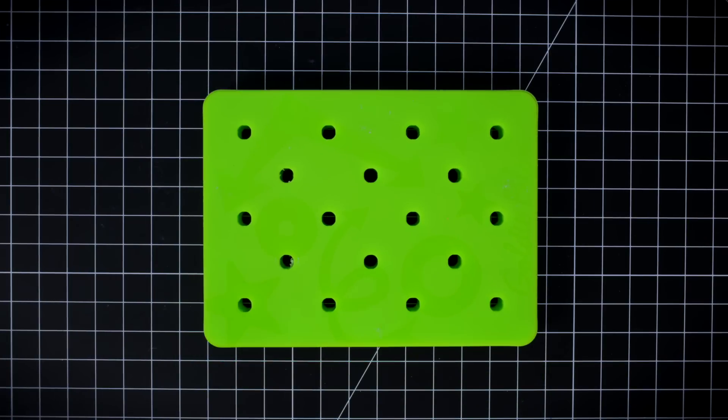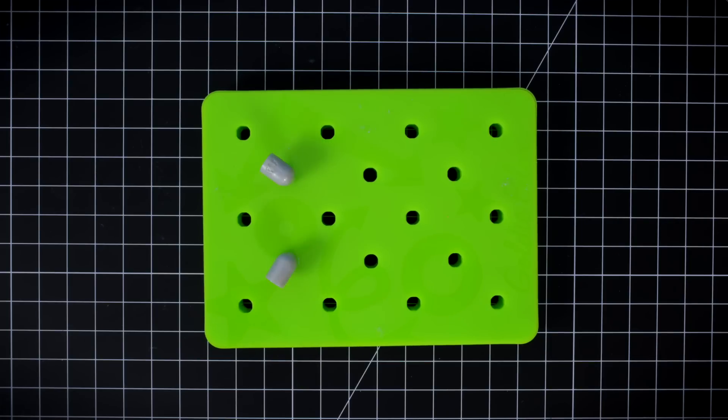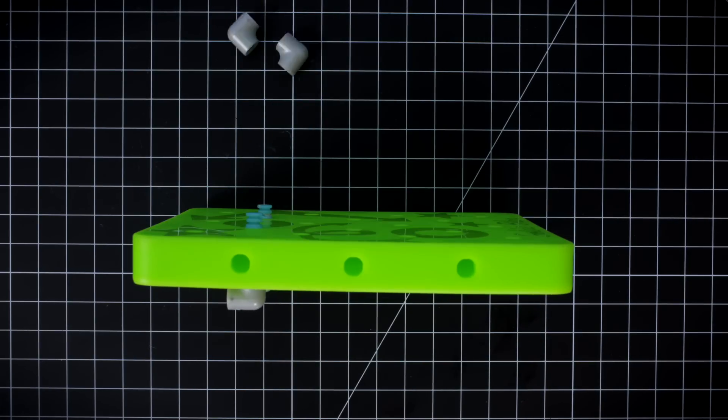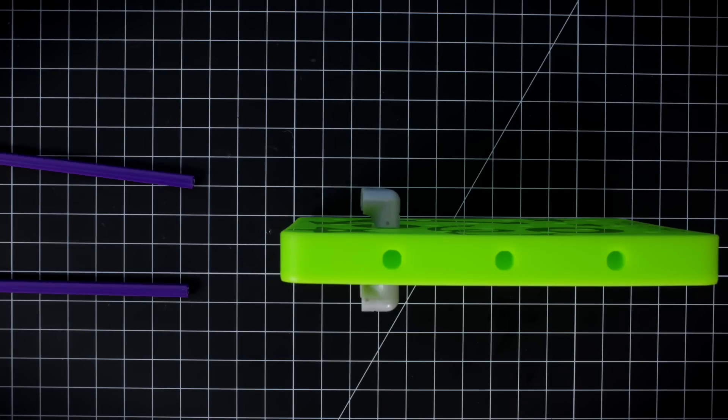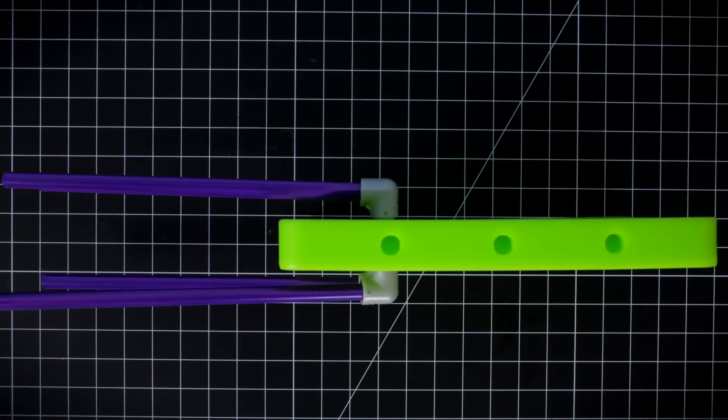Step one. We'll start by building the neck of the guitar. Add two blue pegs and two elbow joints to your green pegboard. Repeat this process on the other side of the board. Now add four long purple axles to each of the elbow joints.